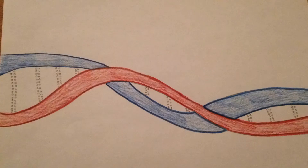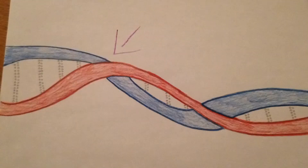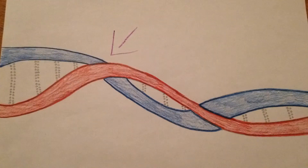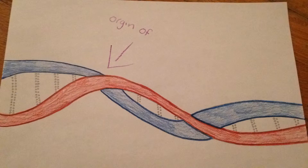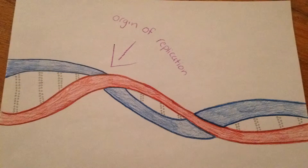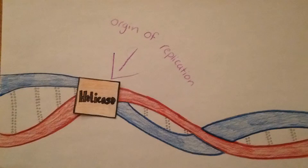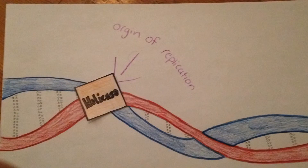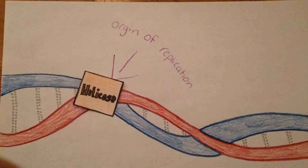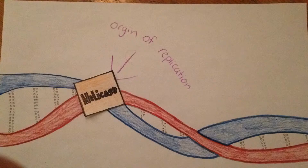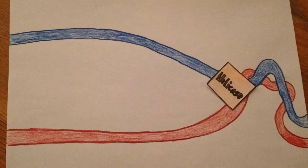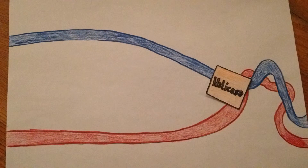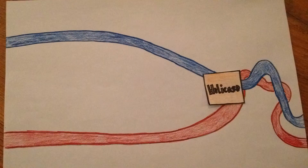It begins at the origin of replication, a site on the DNA strand where the replication starts. Then helicase comes over and unwinds the parental strands from one another and breaks the hydrogen bonds, which creates the replication bubble and the replication fork.